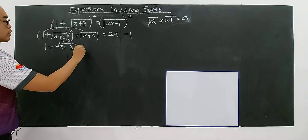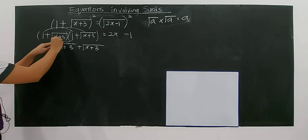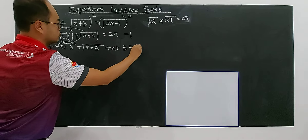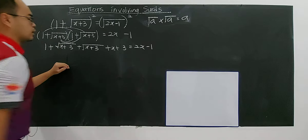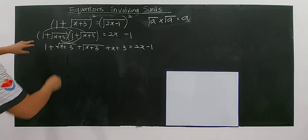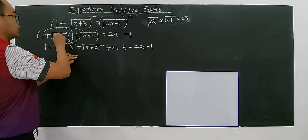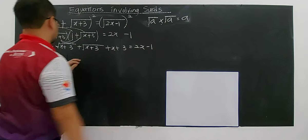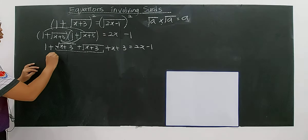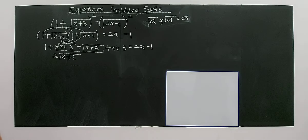Expanding the left side gives you 1 plus square root of x plus 3, plus square root of x plus 3, plus x plus 3, which equals 2x minus 1. Grouping the two square root terms together gives you 2 square root of x plus 3.